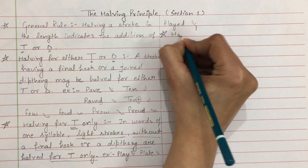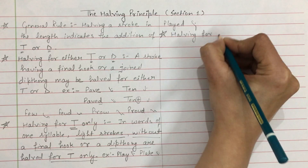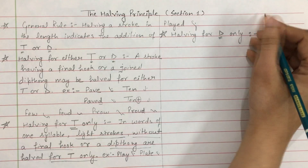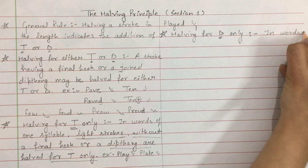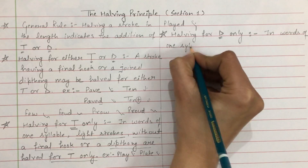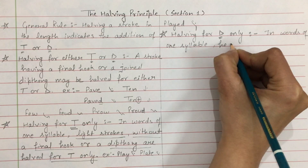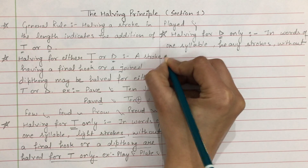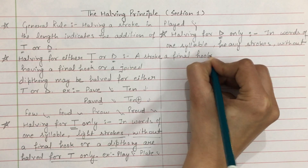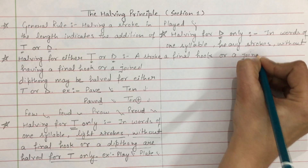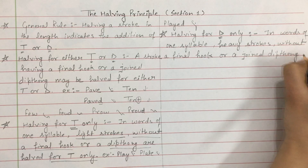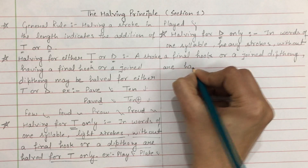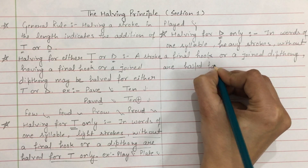Next point: halving for D only। सिर्फ D के लिए half आपको किन cases में करना है — in words of one syllable, heavy strokes without a final hook or a joint diphthong are halved for D only।